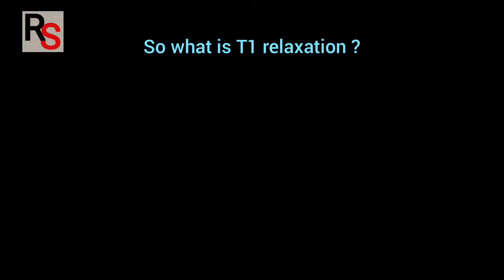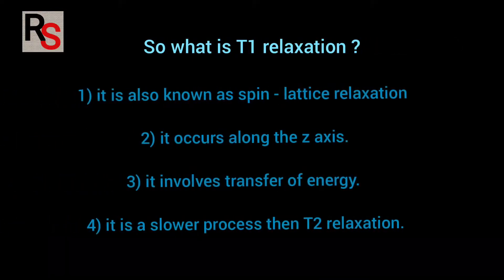T1 is also known as spin-lattice relaxation. It occurs along the Z axis. It involves transfer of energy and it is slower process than T2 relaxation. Now see how simple it is.